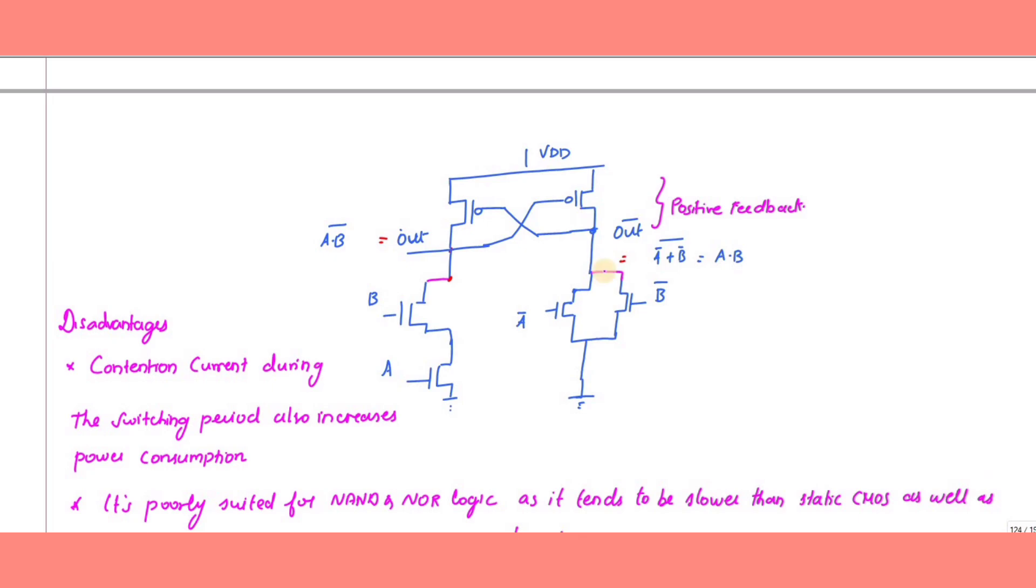To implement an AND gate using DCVSL, connect A and B in series on one side. On the complementary side, connect A-bar and B-bar in parallel. The output becomes (A·B)-bar on one side. The parallel connection gives (A-bar + B-bar)-bar, which equals A·B. This produces complementary outputs (AND and NAND) without requiring additional inverters.